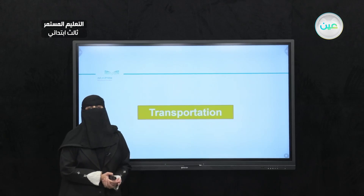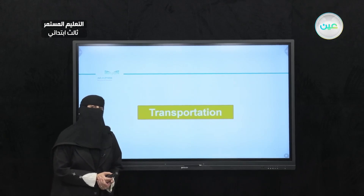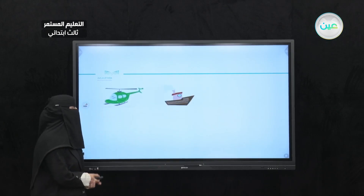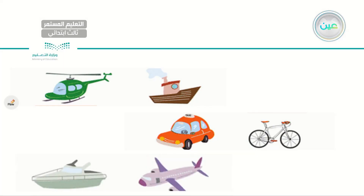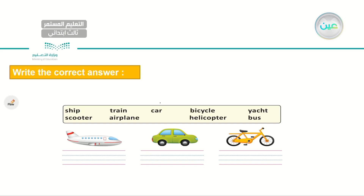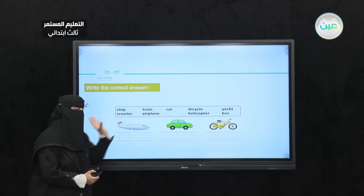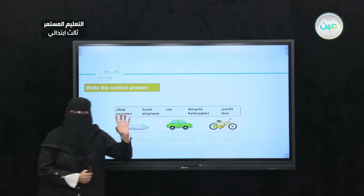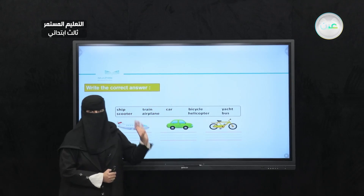Also, we introduced different kinds of transportation. Let me reveal some of the transportation that we use daily. As you can see, we have different kinds of transportation. We will say the names of these in a minute. I have all the transportation names here — let's read them and try to match them in the correct place. I have ship, train, car, bicycle, yacht, scooter, airplane, helicopter, and bus. I'll be giving you 15 seconds — try to name each and every transportation. All the names you need are in the box.